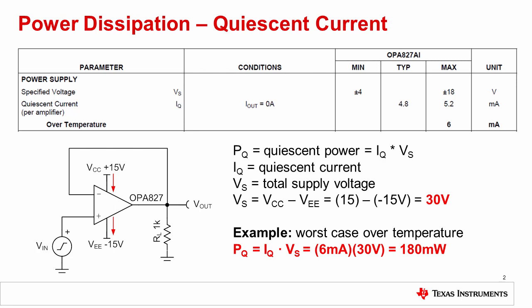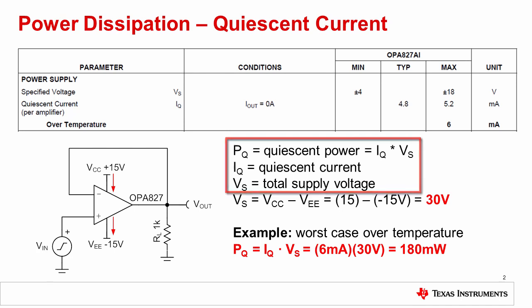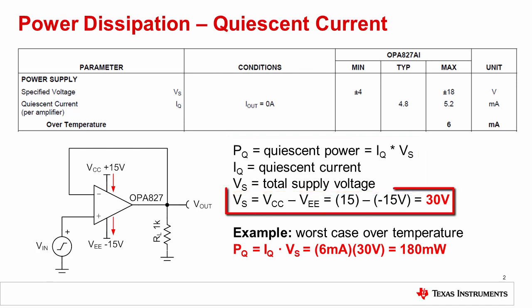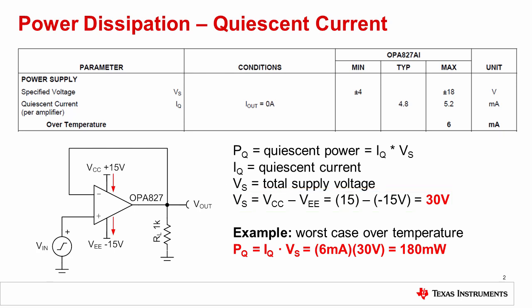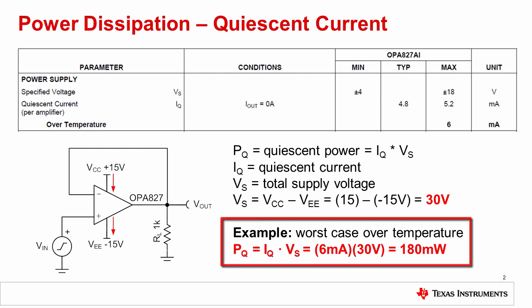Power dissipated from quiescent current is simple to compute, and is equal to the total supply voltage multiplied by the quiescent current. The total supply voltage is computed by subtracting the negative supply from the positive supply, VCC minus VEE. In this example with the OPA827, the total supply voltage is 15 volts minus negative 15 volts, or 30 volts total. The quiescent current is read directly from the datasheet. In this example, we will use an IQ of 6 milliamps, which is the worst case over temperature. This results in a quiescent power dissipation of 180 milliwatts.